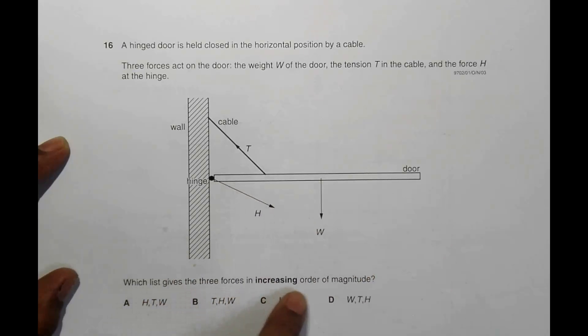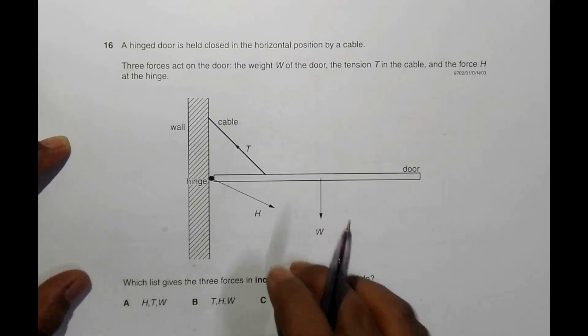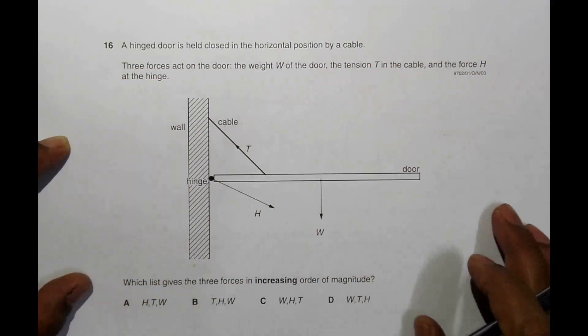So there is a certain force on the hinge as well, which is shown like this. Which list gives the three forces in increasing order of magnitude? So we have to find which force is the largest, which force is the smallest, and list them in increasing order of magnitude.